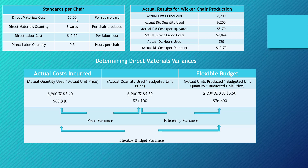Now I have all the information to figure out my variances. The gap between our actual cost and the no-name column is a difference of $1,240. In the no-name column I'm isolating out price, because we're using actual quantity for both calculations — the difference is all attributable to the fact that our actual price was different from our budgeted price. Since we paid $5.70 per yard versus the budgeted $5.50, this is a $1,240 unfavorable direct material price variance.